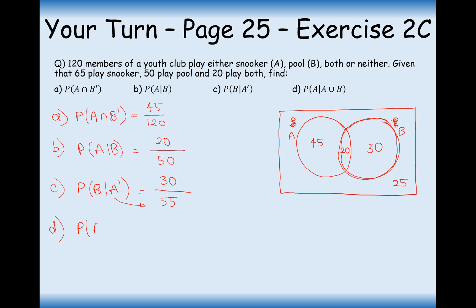The last one: probability of A given that A or B is true. Given that A or B is true, the denominator is these 95 people — someone playing at a pool table or snooker table. We ask them: do you like playing snooker? We cross out the 25 outside both circles because we want people who are either playing snooker or pool. 65 people like playing snooker out of the 95 in that area. So the answer is 65 out of 95, which you can simplify.